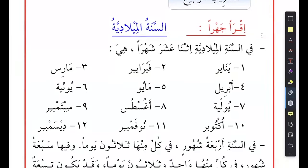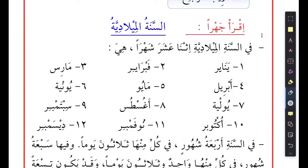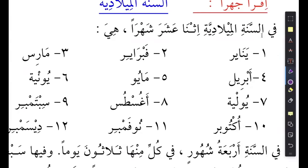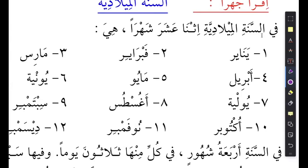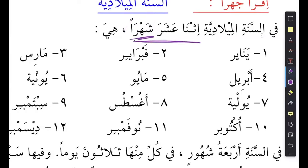It says في السنة الميلادية إثنى عشرة شهراً. So in the Gregorian calendar there are 12 months. Remember, when we have anything more than 10, the thing that you're describing with the numbers — the معدود — will be مفرد, singular. So الشهر is singular, but we're using singular even for 12 months.